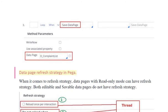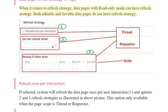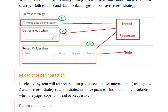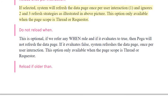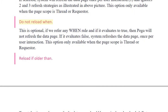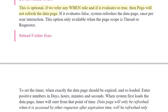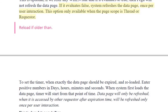Data page refresh strategy in PEGA: When it comes to refresh strategy, data pages with read only mode can have a refresh strategy. Both editable and saveable data pages do not have a refresh strategy. Reload once per interaction: If selected, the system will refresh the data page once per user interaction and ignores other refresh strategies. This option is only available when the page scope is thread or requester. Do not reload when: This is optional — if we refer to any when rule and it evaluates to true, PEGA will not refresh the data page. If it evaluates to false, the system refreshes the data page once per user interaction. This option is only available when the page scope is thread or requester.